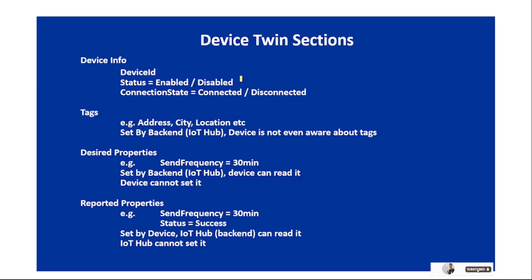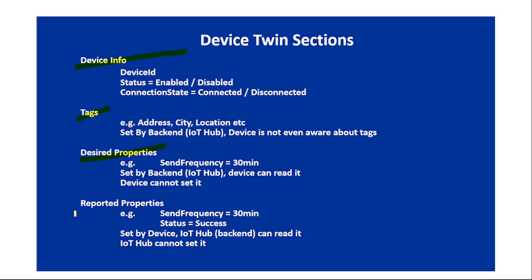Device twin has four sections: device info, tags, desired properties, and reported properties.